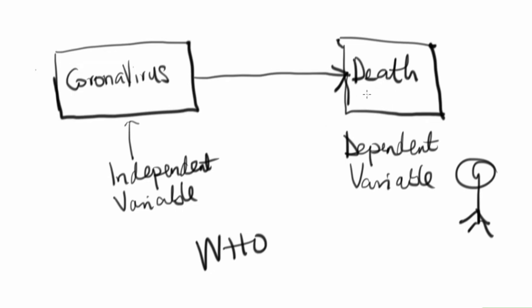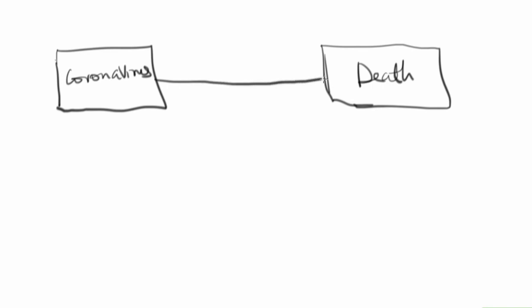Death, on the other hand, depends on coronavirus. For a person to go from alive to dead in this context, they need to have coronavirus. So death depends on coronavirus to take place, and because it depends on something to exist in this study, we call it the dependent variable. Coronavirus does not depend on anything to exist, but death does. Is it true that coronavirus leads to death?